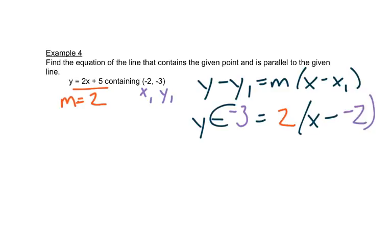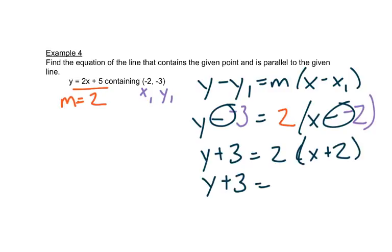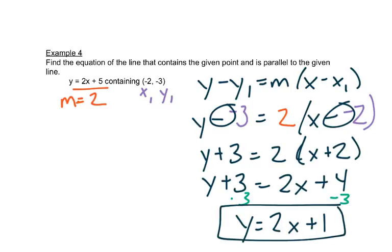So let's do some cleaning up with these signs. Remember this is really plus. And this is really plus. We'll distribute. And then I need to subtract 3 from both sides. And my equation of my new line is y equals 2x plus 1. These two lines are parallel. They have the same slope.